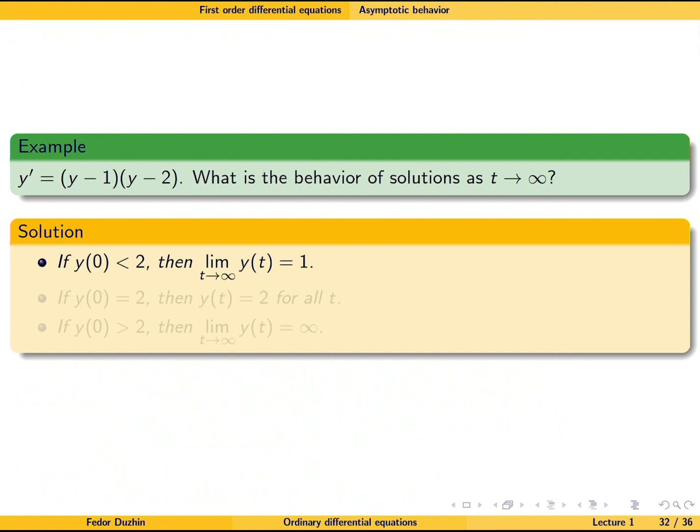Alright, so therefore the answer is like this. If y of 0 is less than 2, then the limit of y of t is 1. If y of 0 is 2, then y of t is just constant 2. But if y of 0 is bigger than 2, then the limit of y of t is infinity.